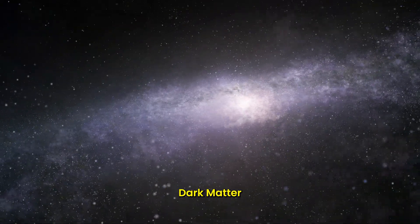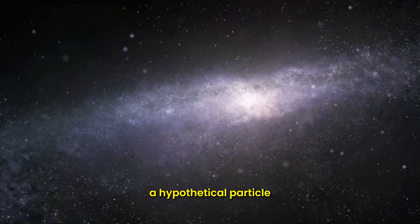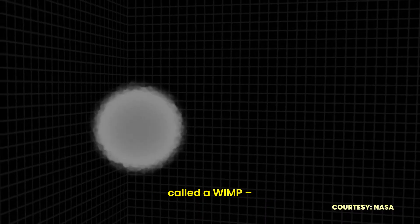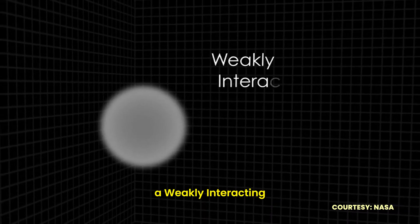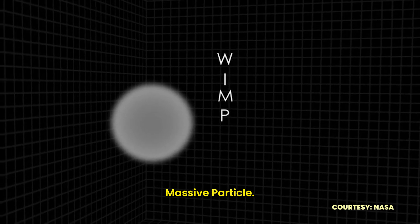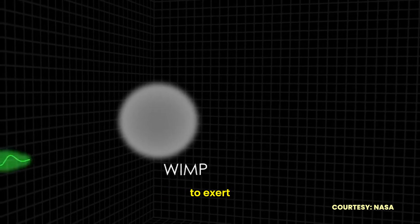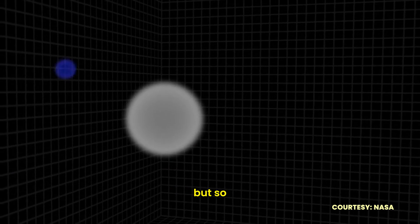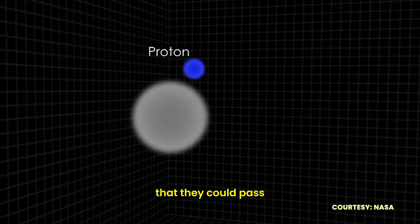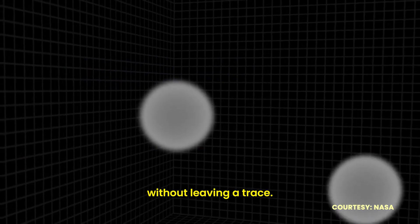The leading theory for what dark matter could be involves a hypothetical particle called a WIMP, a weakly interacting massive particle. These WIMPs would be massive enough to exert gravitational pull, but so weakly interacting that they could pass through entire planets without leaving a trace.